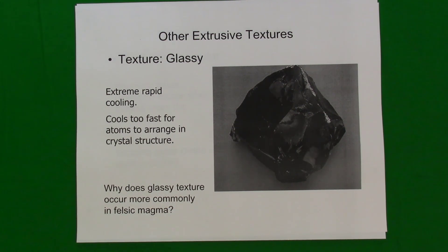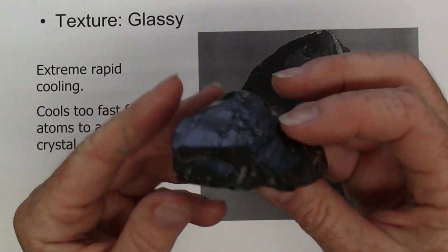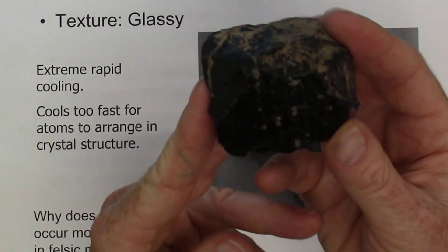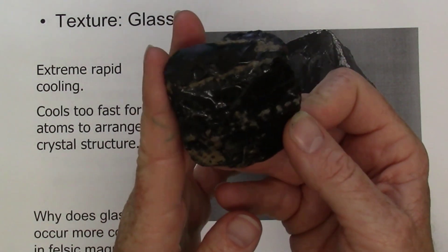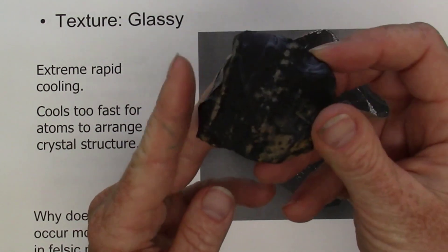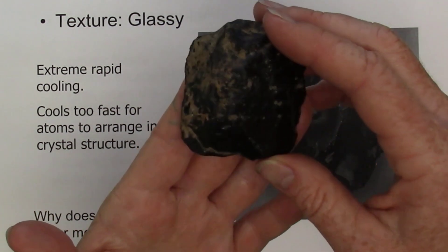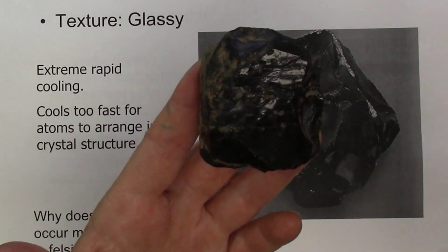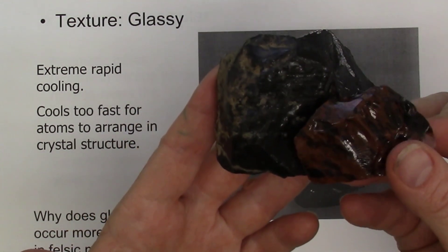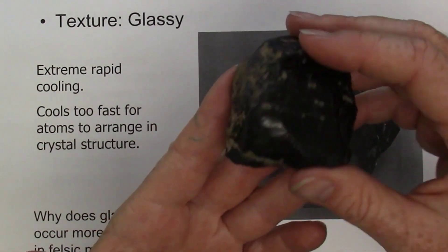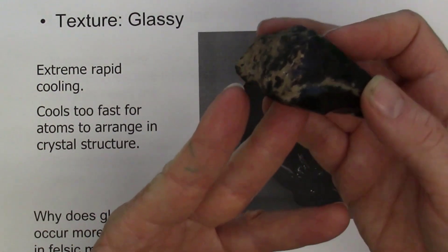Igneous rocks can have other textures. More specifically, extrusive igneous rocks can have more textures because the lava is not always flowing effusively and allowing minerals to form. Sometimes the lava has to cool very quickly, which is common when lava erupts underwater. It can cool so quickly that no minerals can form, no crystalline structure forms, and instead it forms a volcanic glass. Volcanic glass forms an igneous rock called obsidian. Obsidian is usually dark in color — black, sometimes a mahogany color. This doesn't mean it's mafic; it's just that dust particles trapped in the glass infuse this very dark color to the rock.